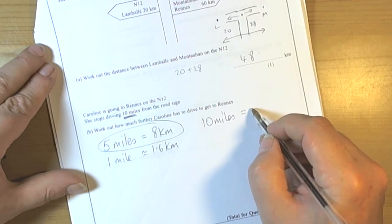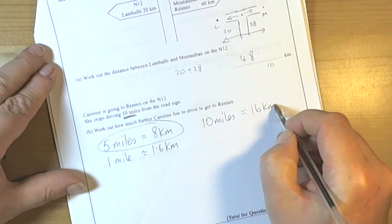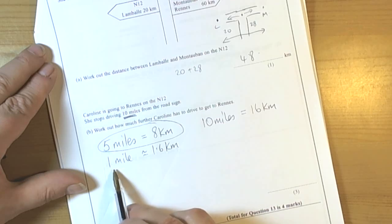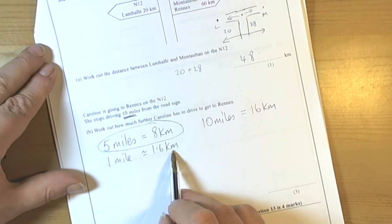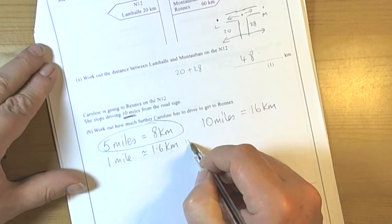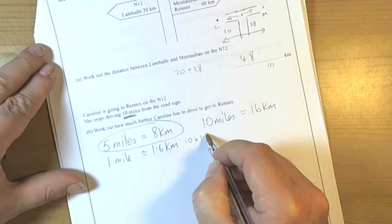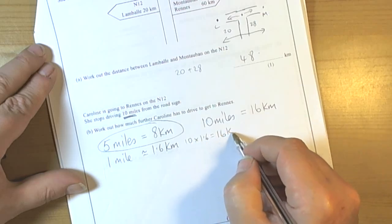So 10 miles is 16 kilometres. Again, if we'd have used the basic fact of 1 mile being 1.6 kilometres, then we would have done 10 miles times 1.6, which is also 16. It shouldn't be any difference in it.